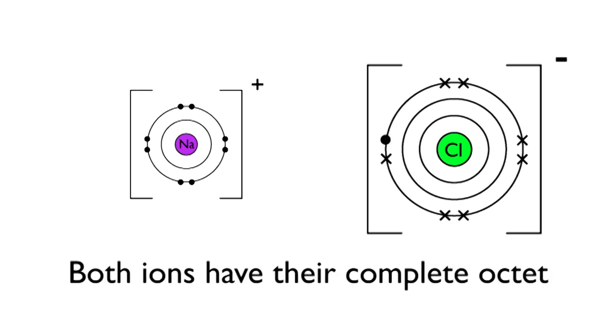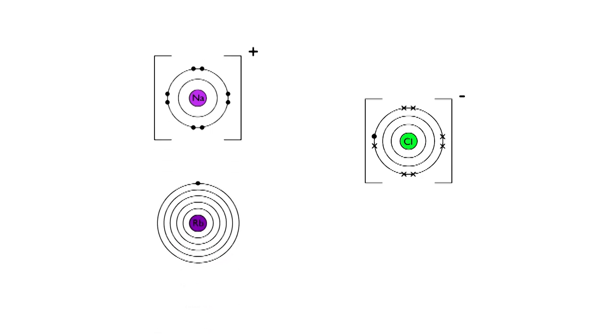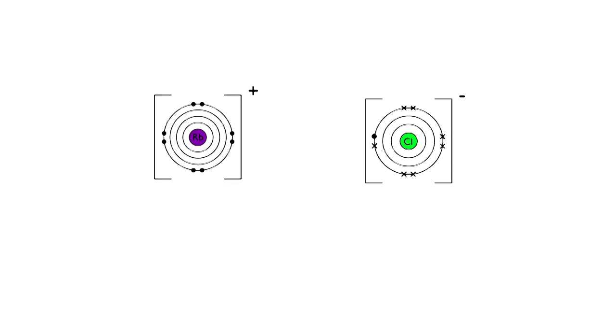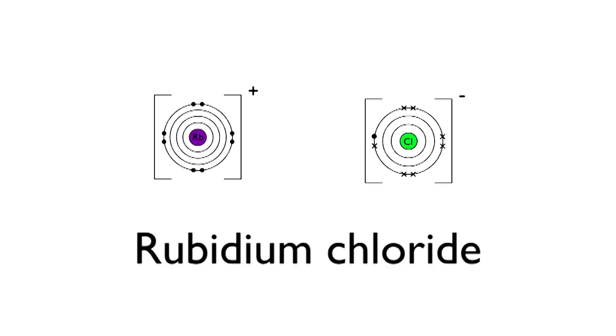But then along comes a rubidium atom. It's much higher in reactivity than the sodium, able to donate its outer shell electron much more easily and attracts the chloride far more. So the chemical reaction happens: the ionic compound becomes rubidium chloride, and the poor old sodium is kicked out and becomes the normal atom again. It has been displaced.